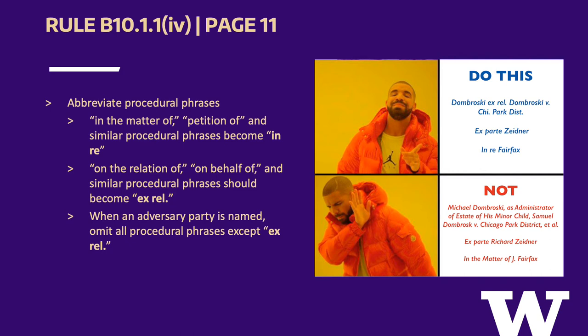The Blue Book reduces extraneous information like other unnamed parties and alternative names in order to emphasize the most relevant information. It also reduces extraneous information by reducing procedural phrases to abbreviations. The Blue Book reduces phrases that provide reference, such as "in the matter of," to "in re." "In re" from Latin translates to "on the matter." "Ex rel" is short for the Latin ex relatione and means "upon relation." It is used to show on what matter a party is acting. When procedural phrases appear in a case name, make sure to properly abbreviate them.